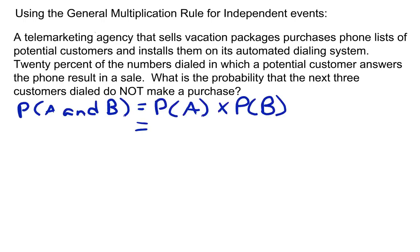First, we need to know that the probability of A and B represents the probability of a customer answering the phone and making a purchase. They give us the information we need. They tell us that the probability of a customer answering the phone and buying something is 20%. So the probability of A and B is 20%.